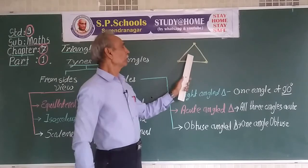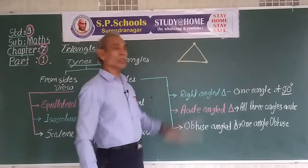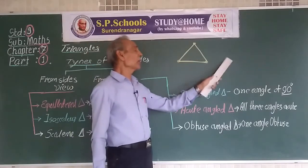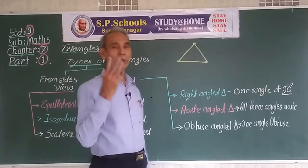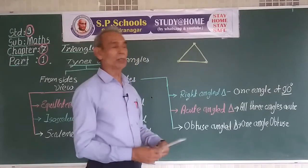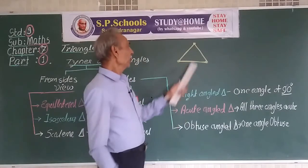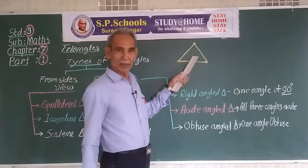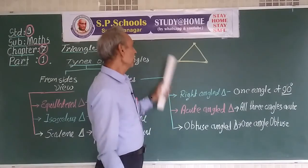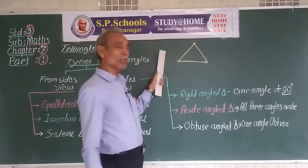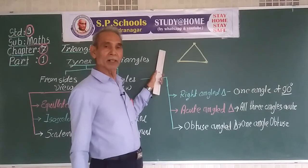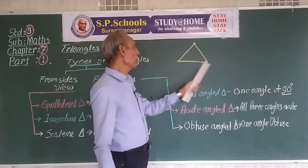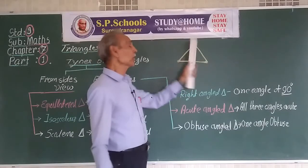This triangle divides the plane into three parts: the interior of the triangle, the exterior of the triangle, and the points of the triangle itself.